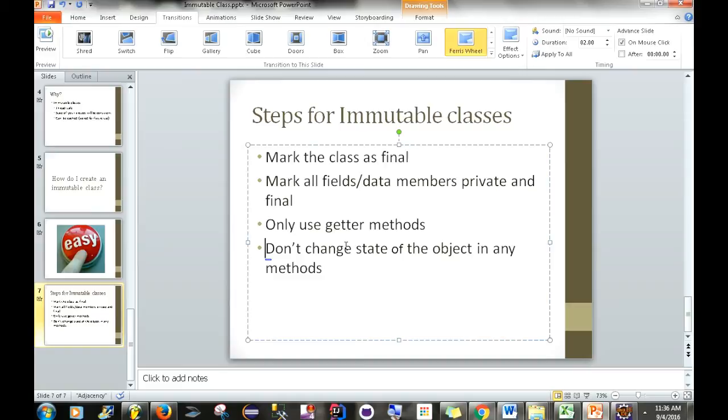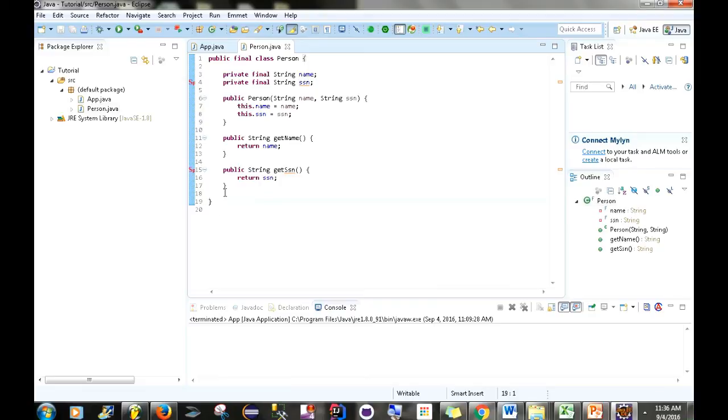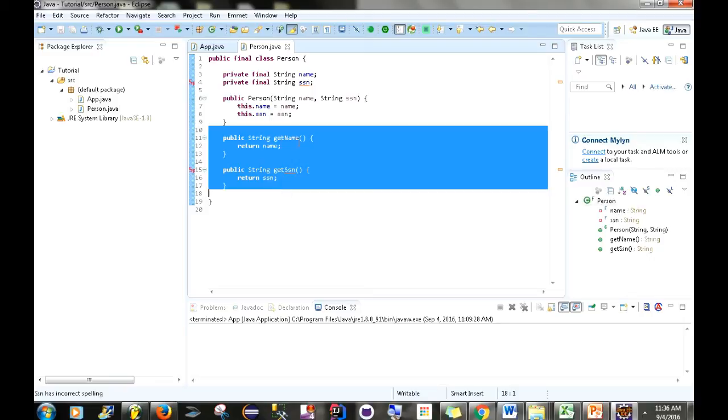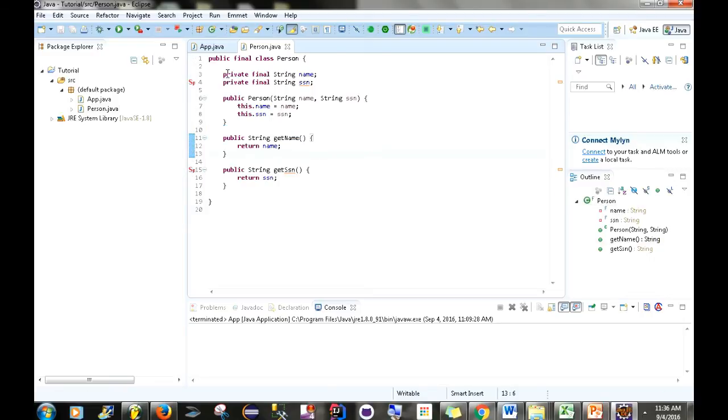Yeah. And also, this last part, don't change the state of the object in any methods. So, due to the fact that we're not going to be adding any more methods here, we're just going to have our getter methods as well as the data members. And we want to just make sure that this class is final. And this is pretty much it. Creating an immutable object is fairly simple.